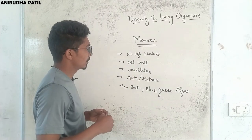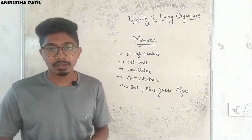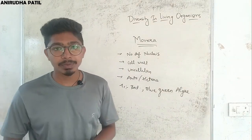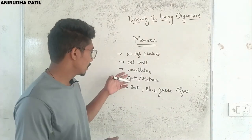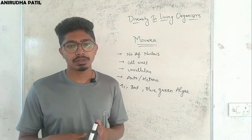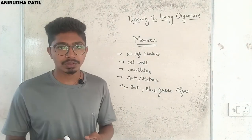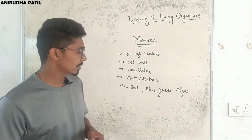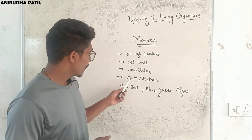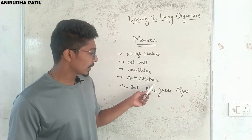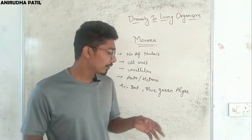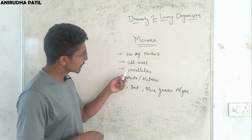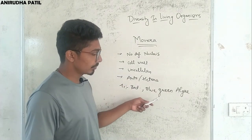The first group is Monera. In Monera, they don't have a defined nucleus, and the cell wall may or may not be present. Most organisms are unicellular, with very few multicellular ones. They may be autotrophic — meaning they prepare their own food — or heterotrophic, meaning they depend on others for food. Examples include bacteria and blue-green algae.